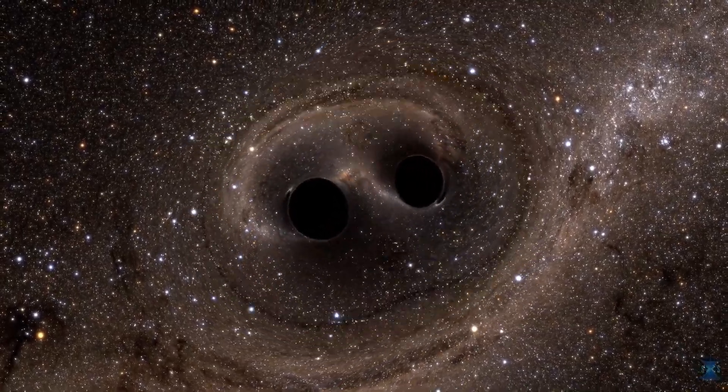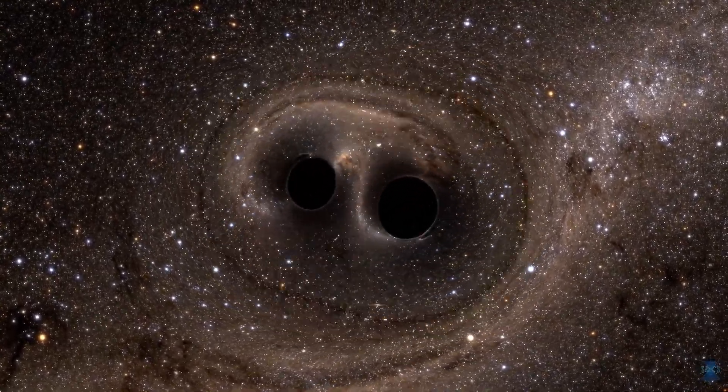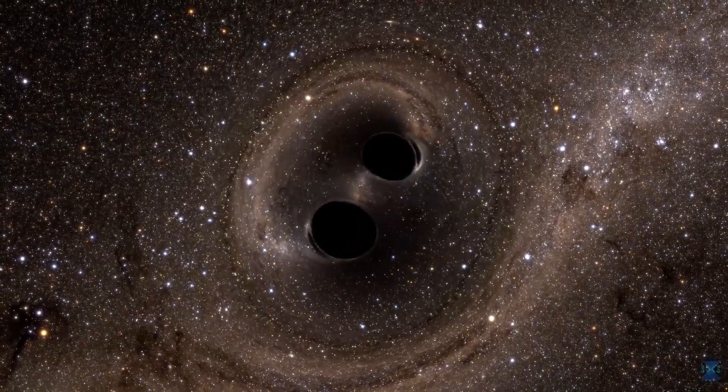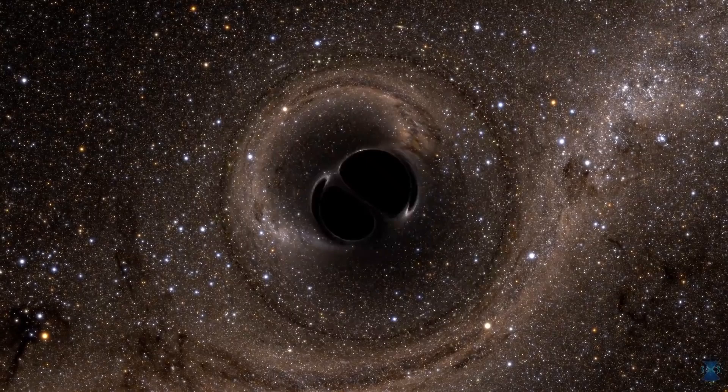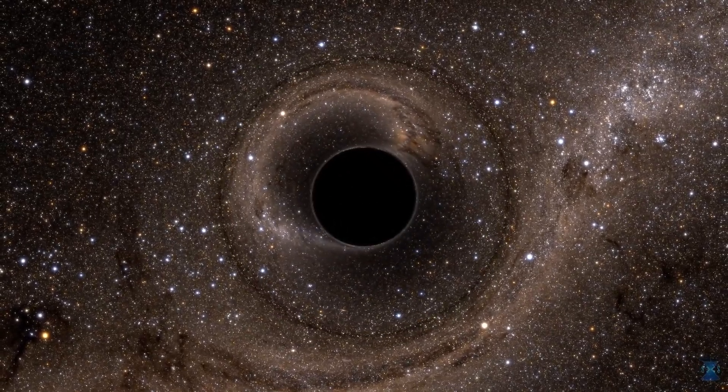Set on a cosmic stage, the black holes are posed in front of stars, gas, and dust. Their extreme gravity lenses the light from behind them into Einstein rings as they spiral closer and finally merge into one.